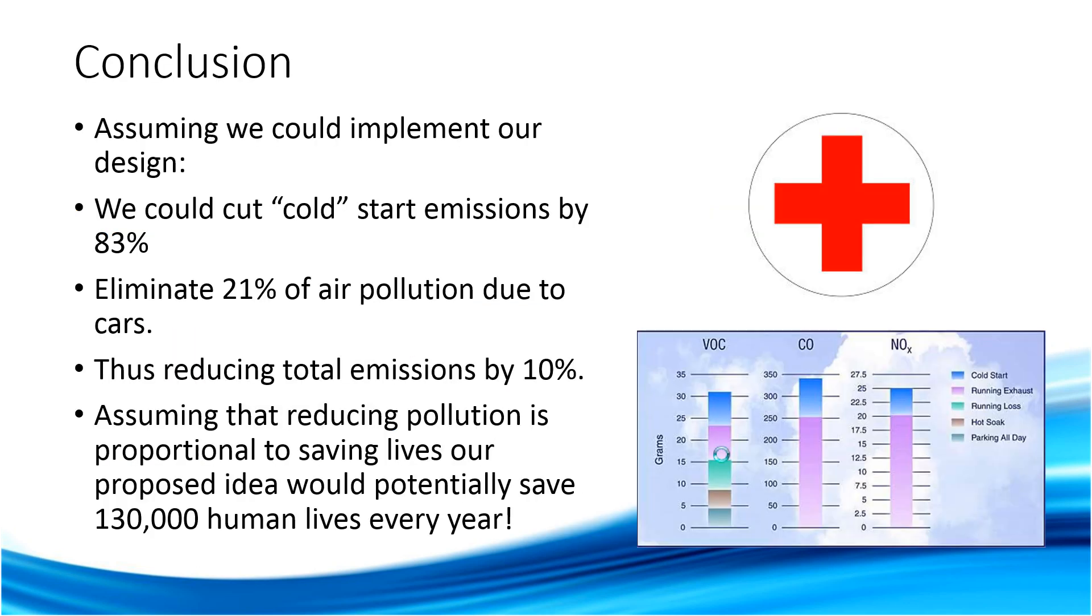So what this all means, if we could actually implement this design, we could cut cold start emissions by 83%, which is pretty nice. And that translates into eliminating 21% of air pollution from cars. And in the overall grand scheme of things, that would reduce total emissions by 10%. And so assuming that reducing pollution is proportional to saving human lives, our proposed idea would actually save 130,000 human lives every year.